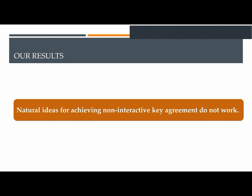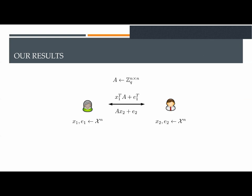Our result comes summarized in the following statement. Natural ideas for achieving non-interactive key agreement in this model do not work. As we said in LWE-based key agreement, parties have a publicly known matrix A and exchange in parallel LWE samples. We generalize this model by allowing parties to exchange more than one sample. So, they share many matrices A_i and they exchange many LWE samples as shown in the picture.